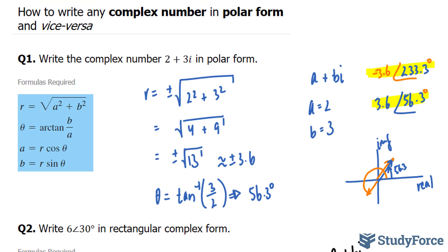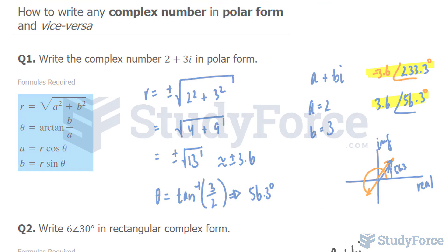And so there you have it. That is how to write any complex number in polar form and vice versa.